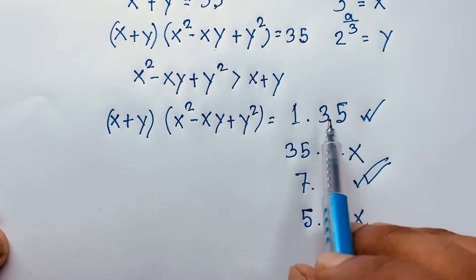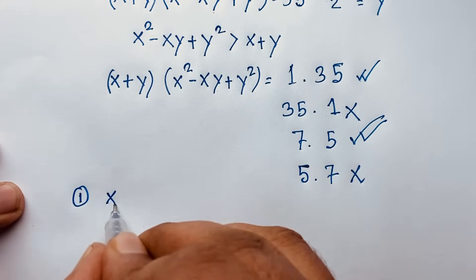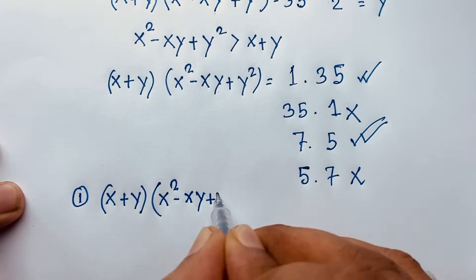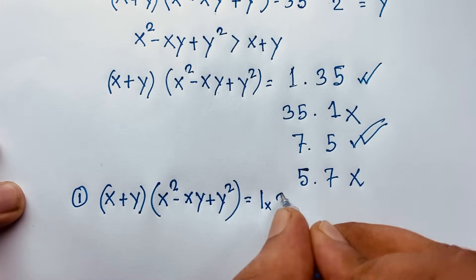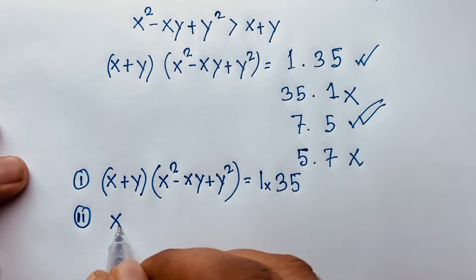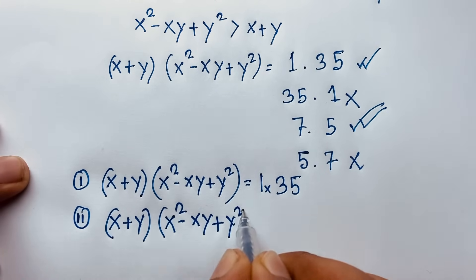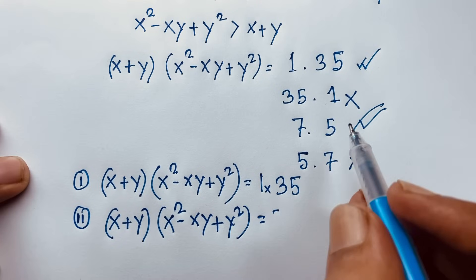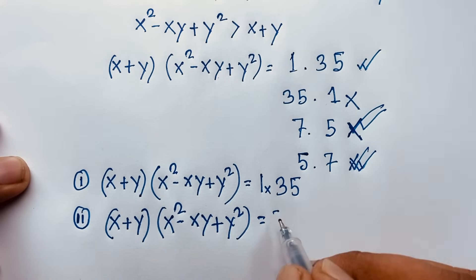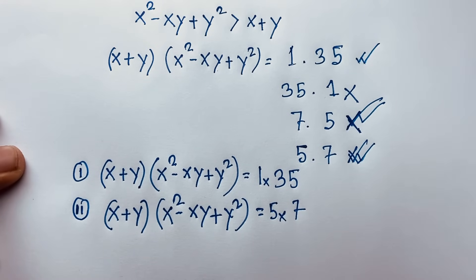Evaluating which cases are possible: the case x plus y times (x squared minus xy plus y squared) equal to 1 times 35 is one candidate, and 5 times 7 is another valid candidate. The other arrangements are not possible because the larger expression must exceed the smaller one.